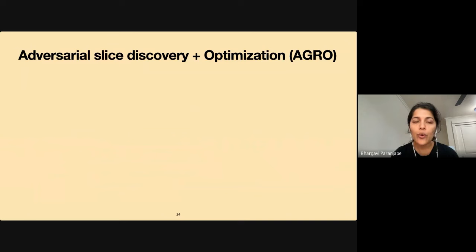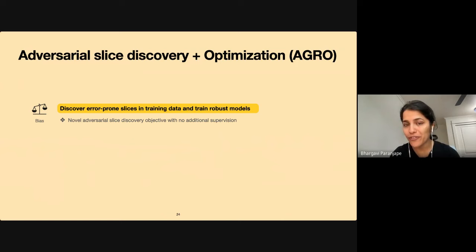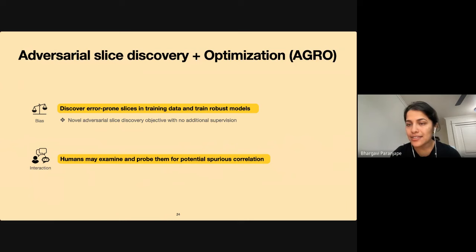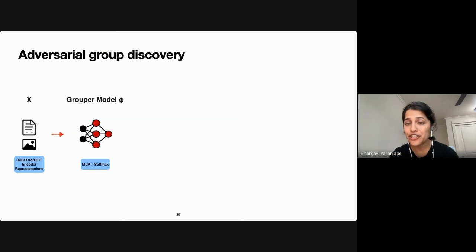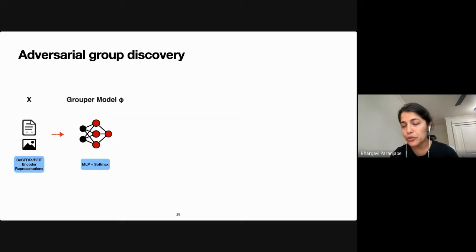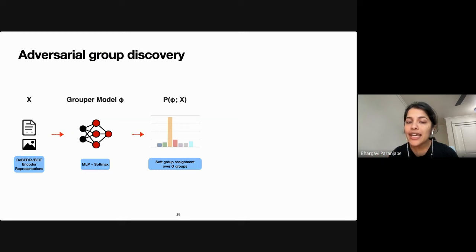So we propose an adversarial slice discovery and optimization technique. Our approach discovers error-prone slices with no additional supervision, and simultaneously trains a model to be robust to these discovered slices. We train a dedicated grouper model whose task is to discover error-prone slices. The input to the grouper is text and image representations from a strong pre-trained encoder, and instead of assigning each example to a specific group, the grouper learns a soft distribution of groups over the training data.